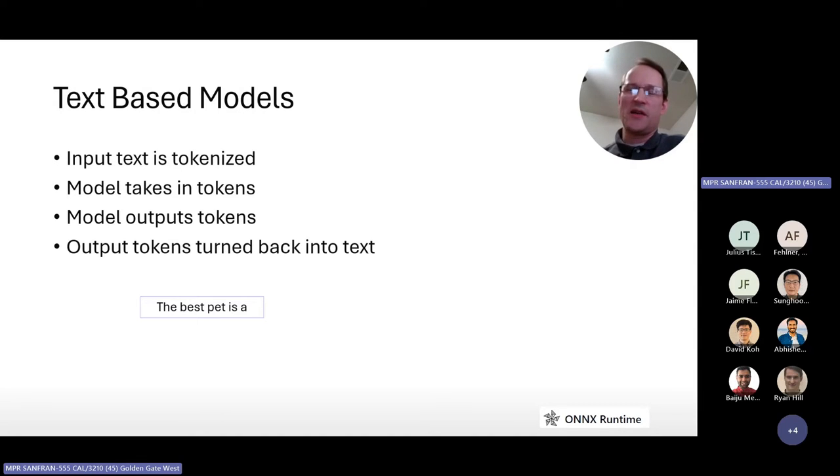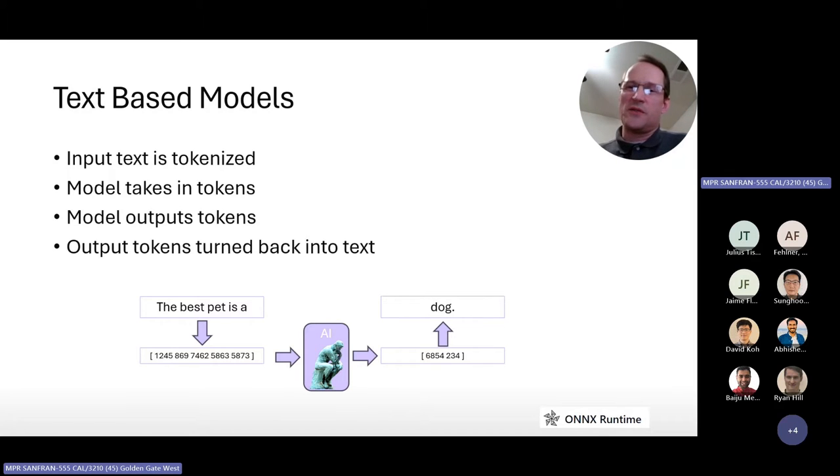So I'm sure pretty much everybody here has heard of ChatGPT, but what happens right below the surface? The first thing that happens when you give it a prompt, like the best pet is A, it turns it into an array of tokens. They're just an array of numbers. The ranges I've seen tend to be at most around 50,000 or so as the maximum number. The tokens get sent to the AI model, which then will output more tokens, which of course are the answers. So translating those tokens back into text is dog.